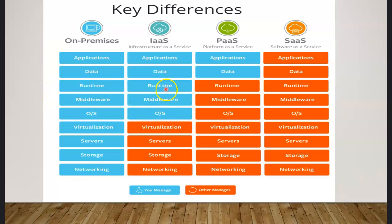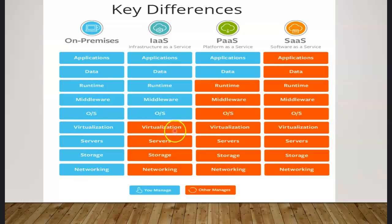With IaaS there is no upfront cost — we just use a pay-as-you-go model. That means only the minutes or hours that we use the server, the spin-up time, will be calculated. So it is still a lot more cost efficient than managing your own data center. Along with that, there is no physical infrastructure to manage, as the orange portion is fully managed by your service provider — in this case, Microsoft Azure.